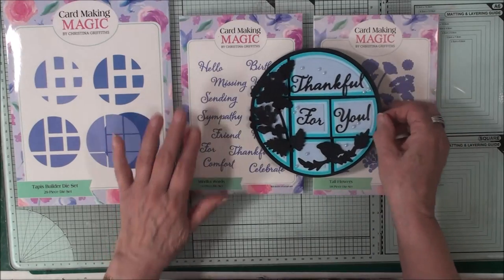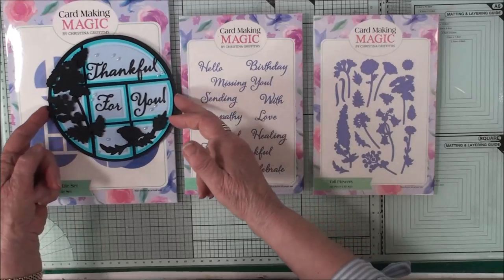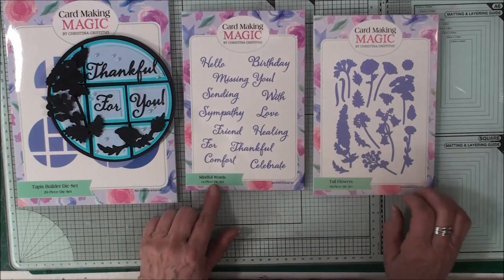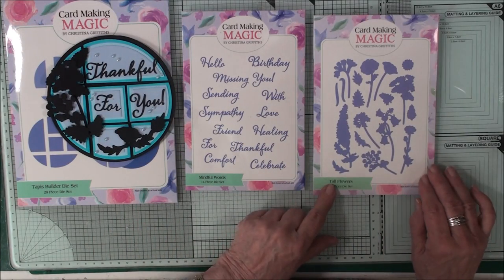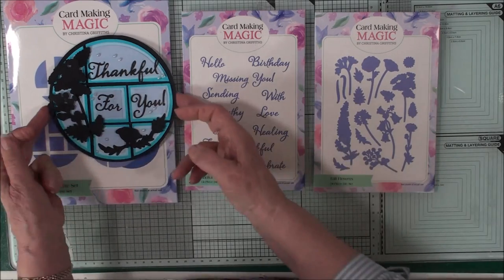To finish my card I've just added some tiny blue pearls to the piece on the front. This is a recap of the things that we've used: the Tapis Builder die set, mindful words, the tall flowers, and the turquoise and black card to create the card.